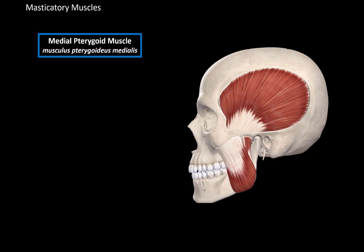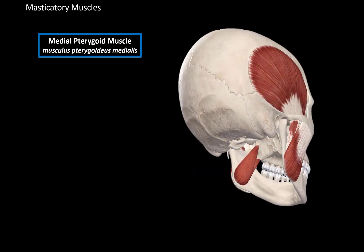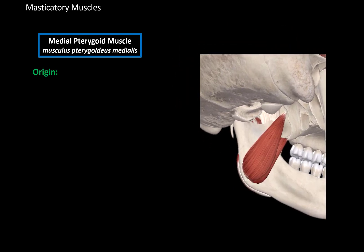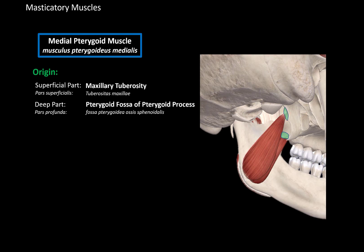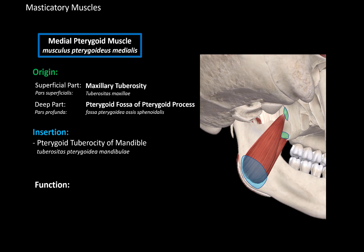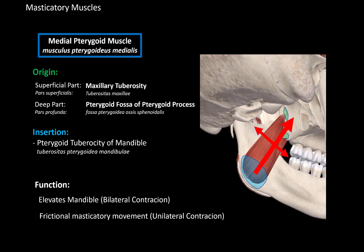Next we have the medial pterygoid muscle. To see this one, we need to look at the head from a different perspective. It is located on the other side of the masseter muscle and has a superficial part and a deep part. The superficial part originates from the maxillary tuberosity, and the deep part originates from the pterygoid fossa of the pterygoid process. These fibers go down and insert at the pterygoid tuberosity of the mandible. The function of this muscle is elevation of the mandible when both the right and left sides contract, or a frictional masticatory grinding movement when only one side contracts.